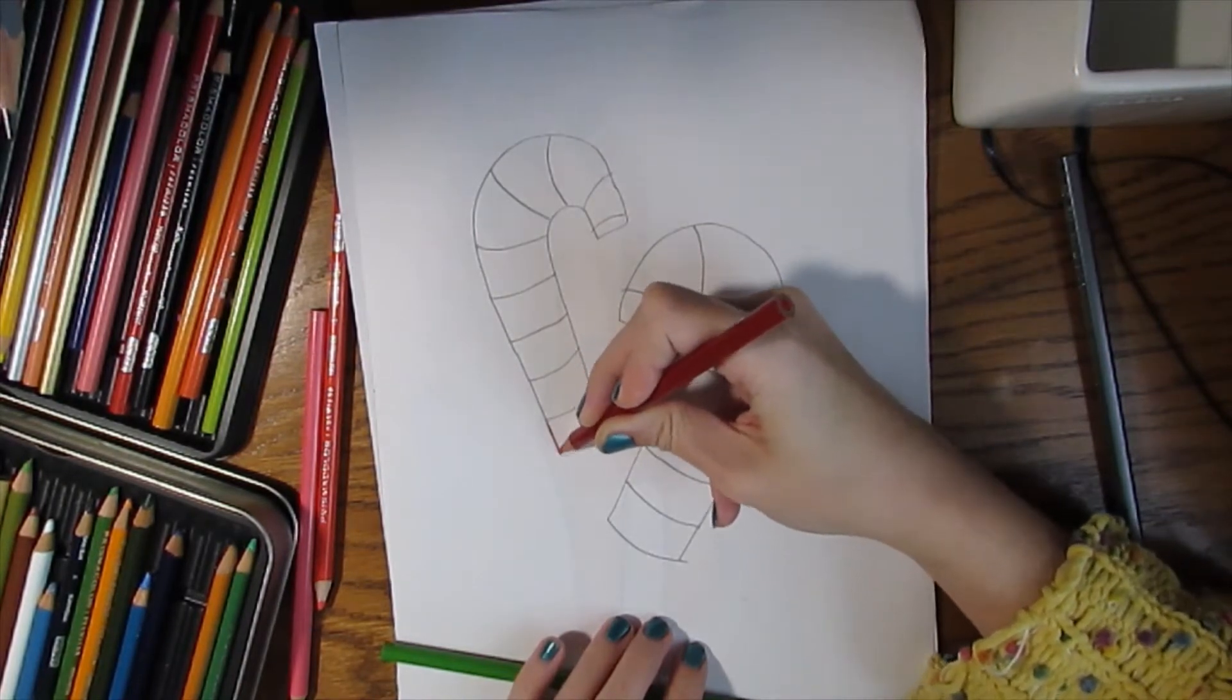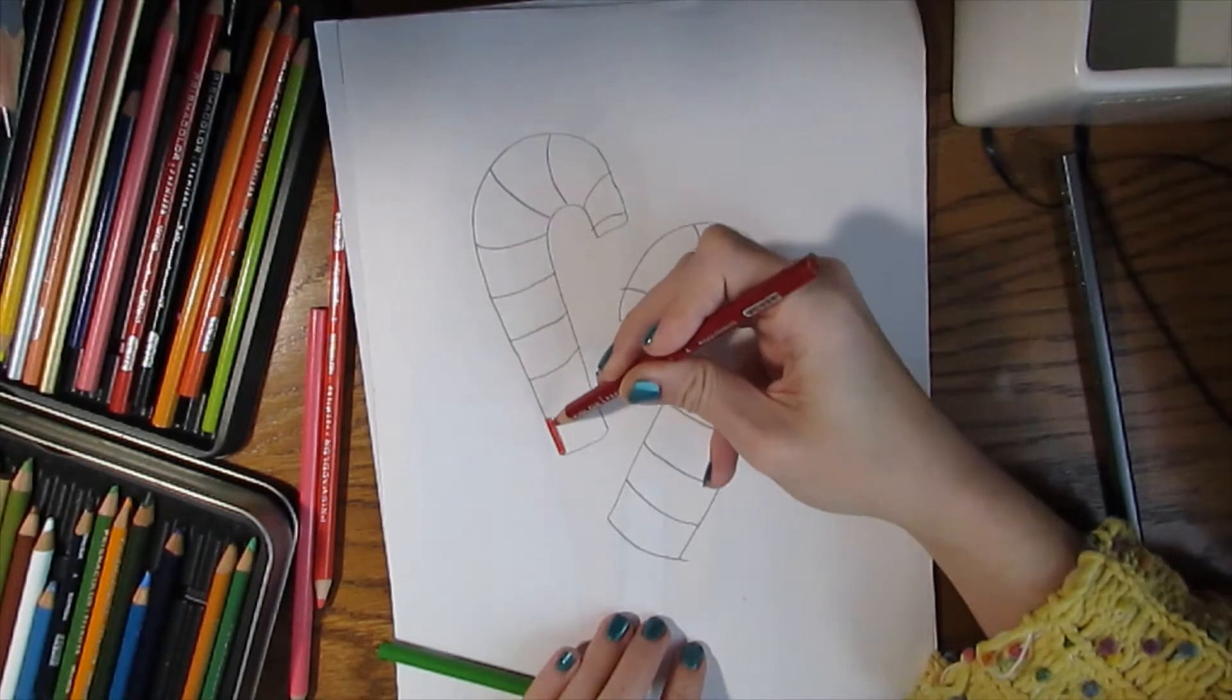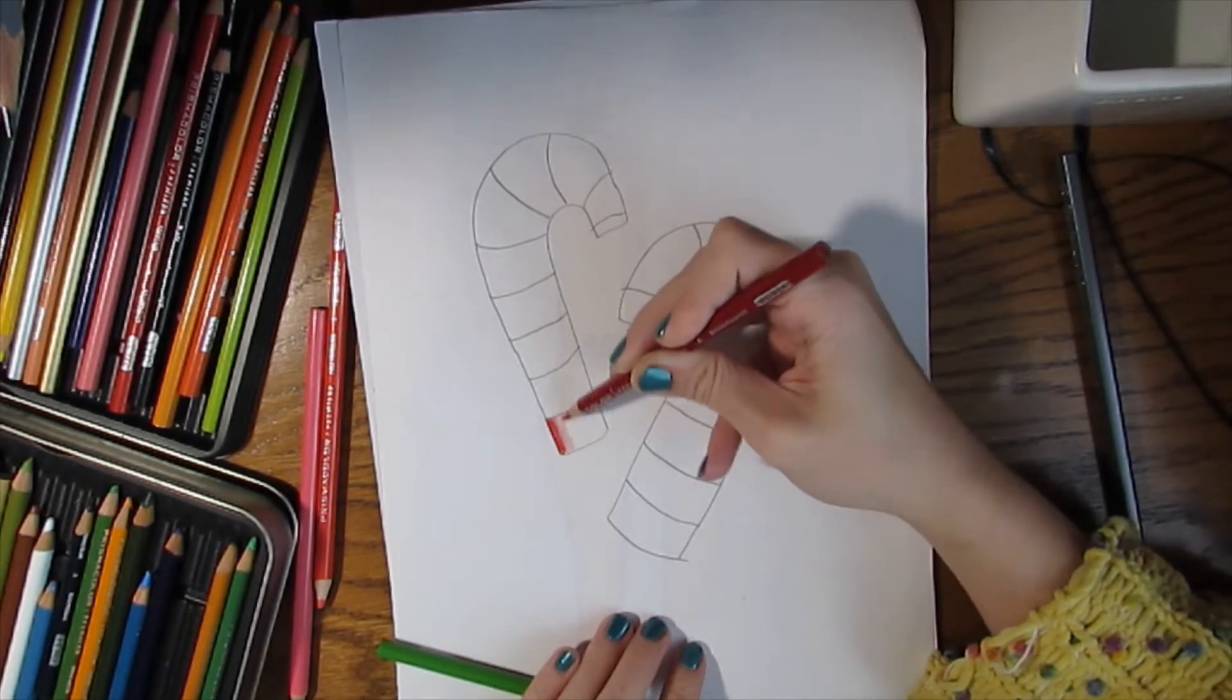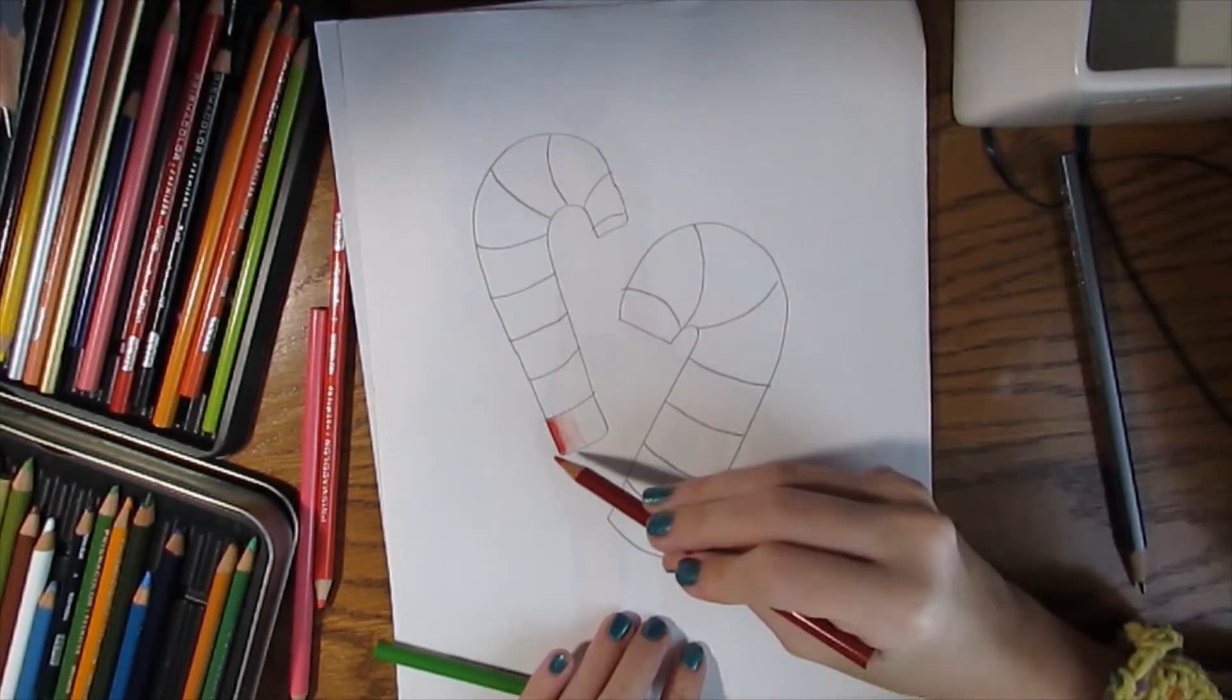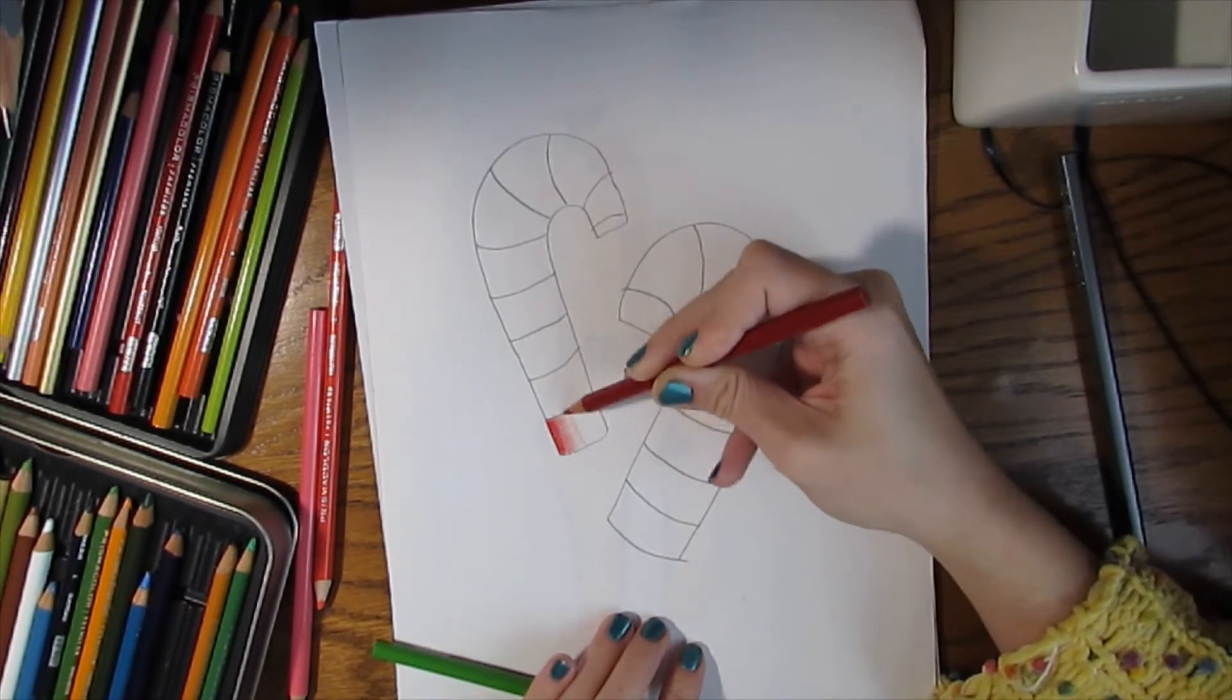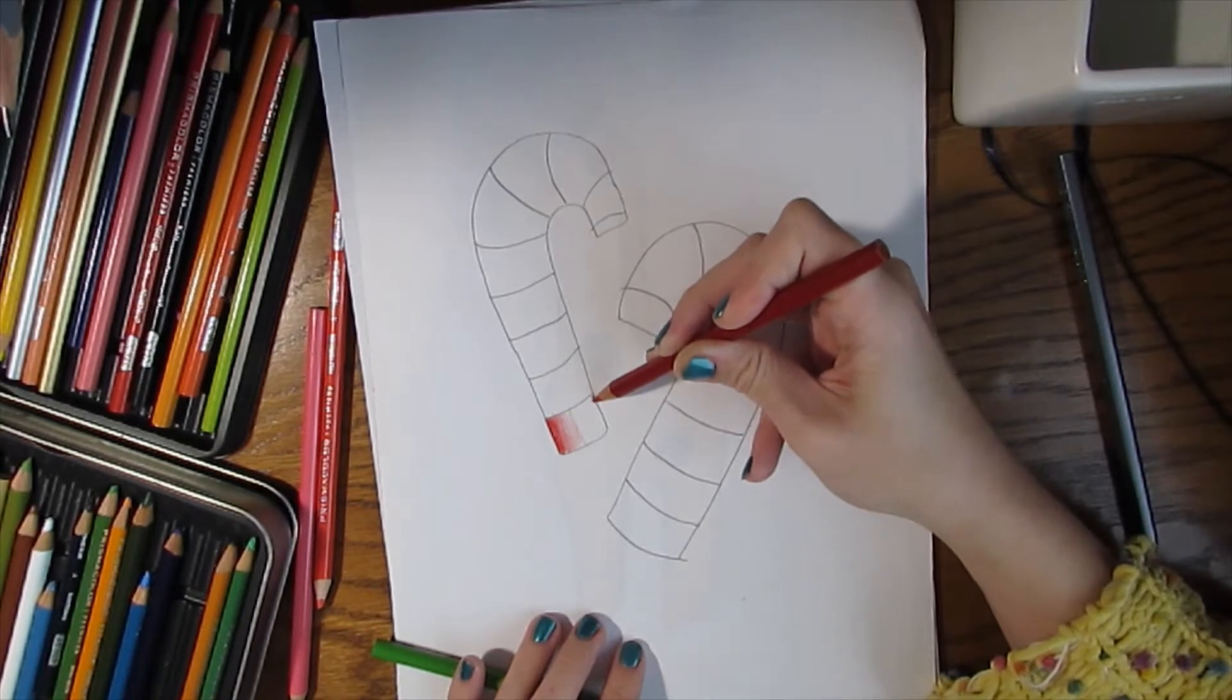I'll start right here at the bottom and you start by pressing down really hard as you work your way towards the middle. As you can see I press down really hard here, but as I start to go towards this middle section I'm going to lighten up how hard I work with my pencil. Once you get to the middle you should barely be touching your pencil to the paper.